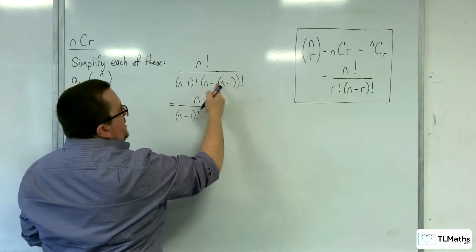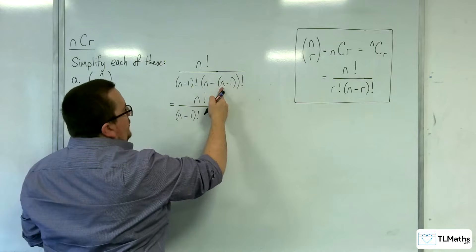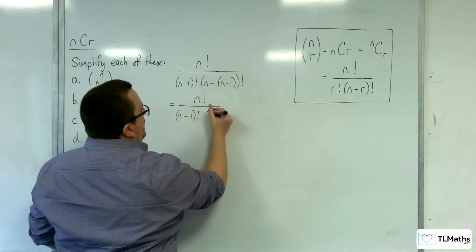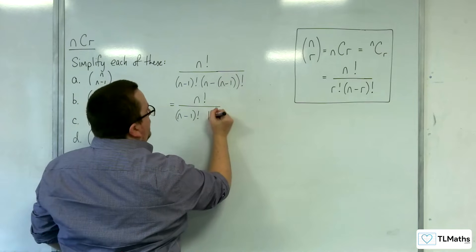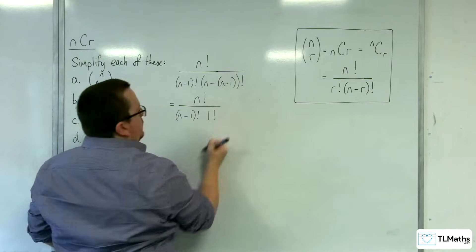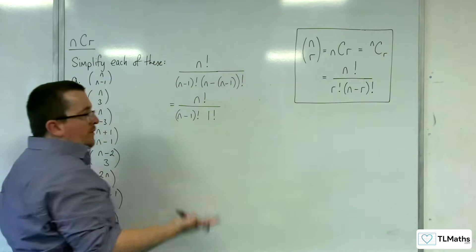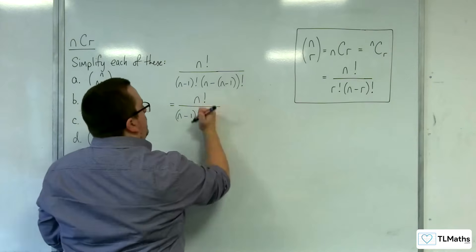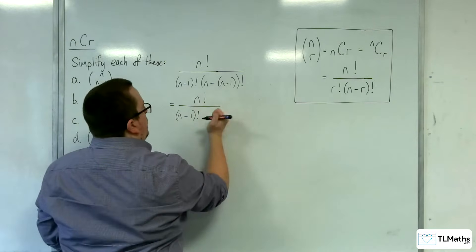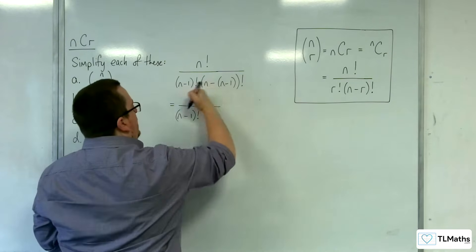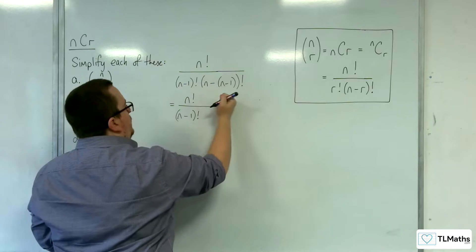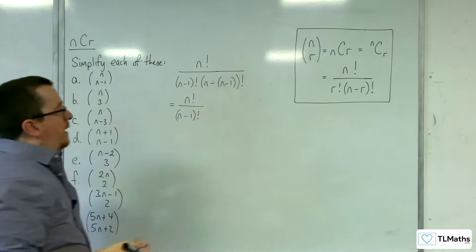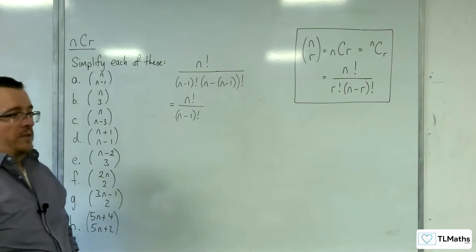In the denominator we have N take away N, which is 0, take away minus 1, which is 1 — so we'd have 1 factorial. Now 1 factorial is just 1, so we don't have to worry about that. So all we've got is N factorial over N-1 factorial.